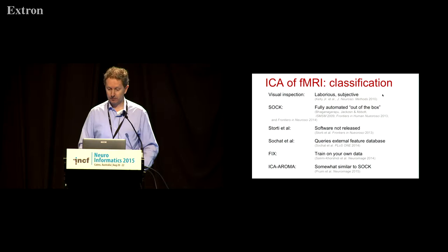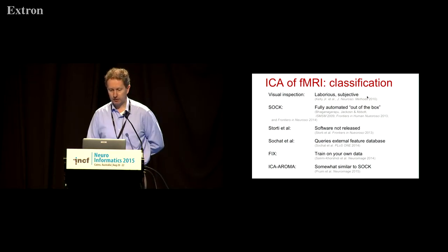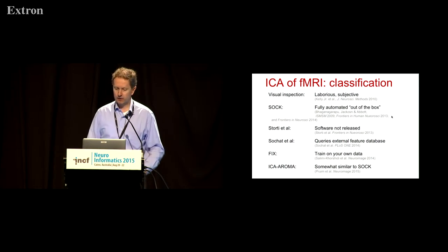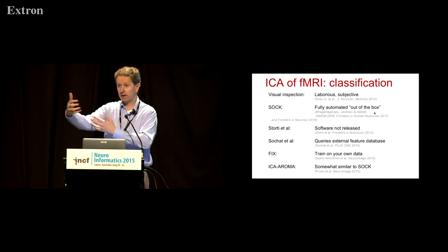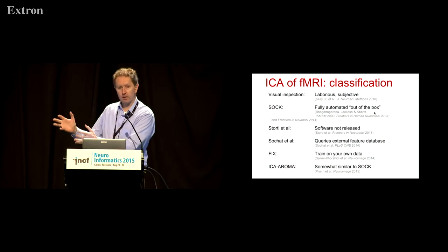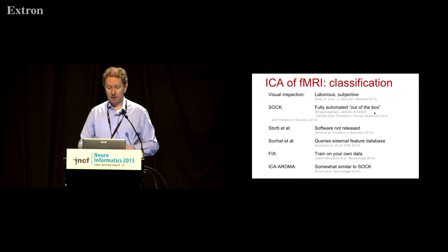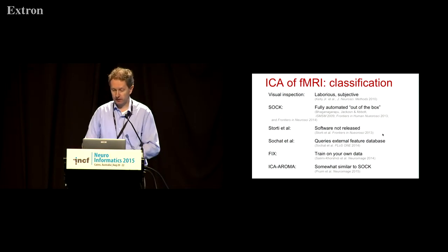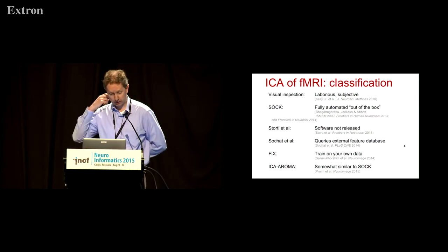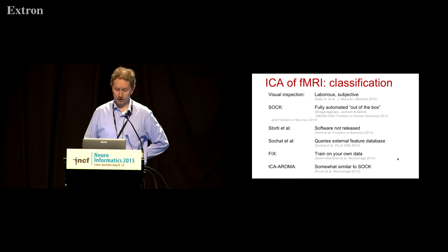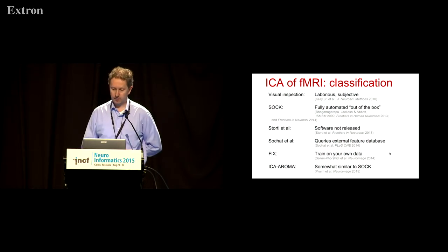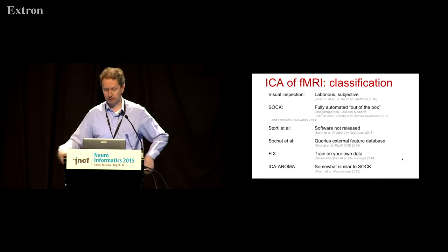If we know this already, can we apply it in an automatic classification scheme? The answer is yes, and there have been recent efforts: starting with systematic visual inspection, then more protocol-driven visual inspection, though that's very laborious. We developed the SOC algorithm, a fully automated approach that takes those features and identifies components as noise. There have also been other recent approaches — some with software not publicly available, but most are available. One interesting approach queries an external feature database to identify particular resting-state networks, and there are methods that require training on your own data.